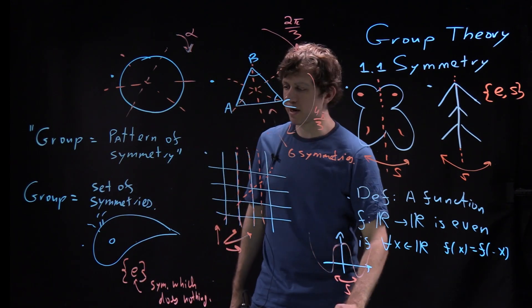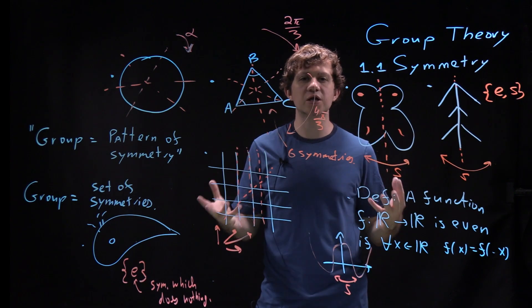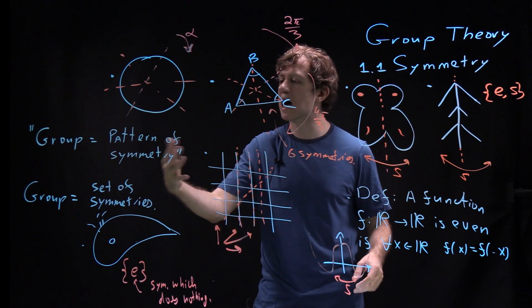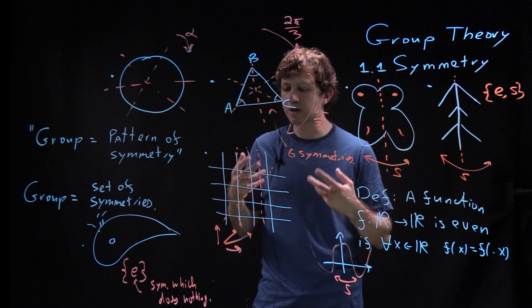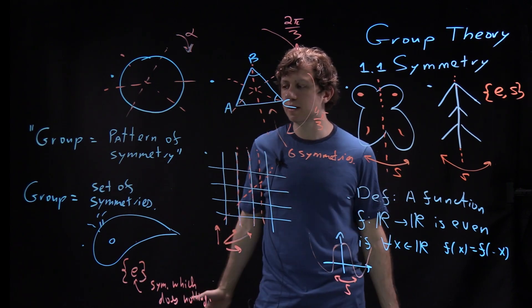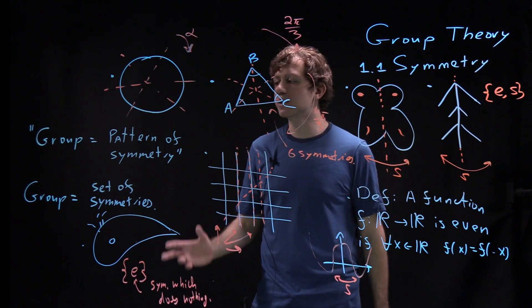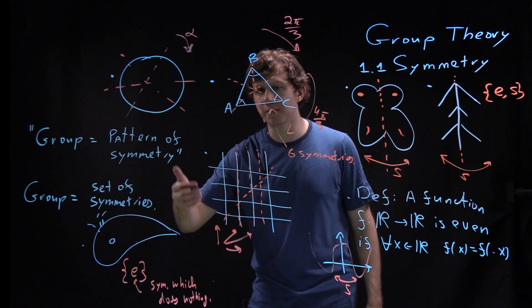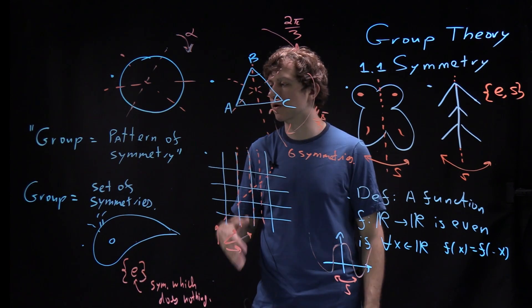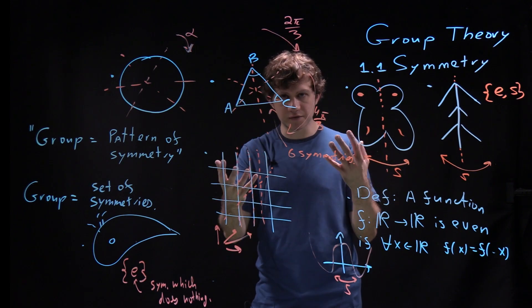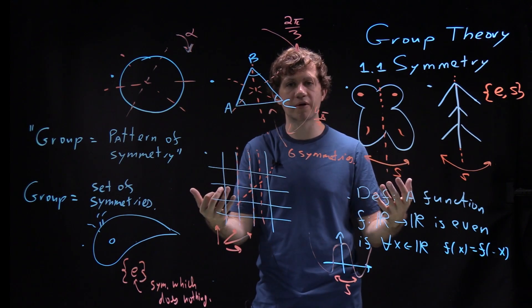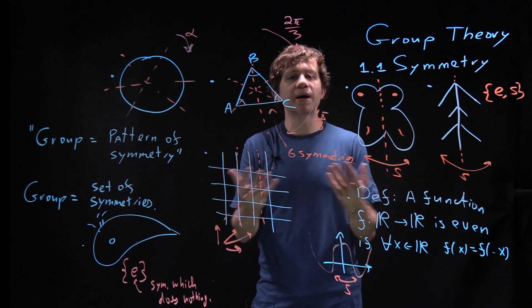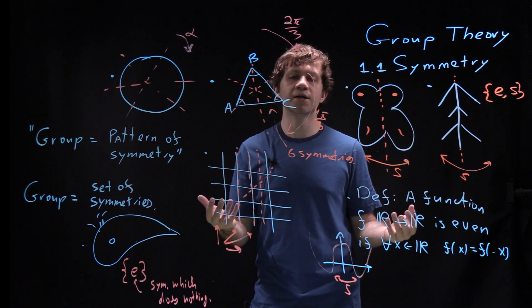And then of course the main question is: what is special about sets of symmetries? What kind of sets are there? Do they have some additional structure? And of course at first you can say, okay, at least the number of elements in the set is important. But then you can ask, okay, if you have two sets of symmetries of two objects with the same number of elements, is the pattern of symmetry the same?